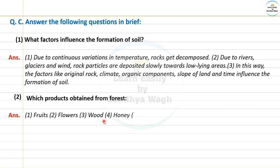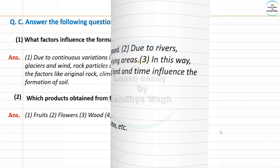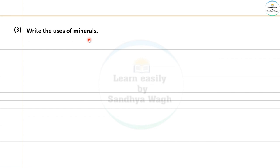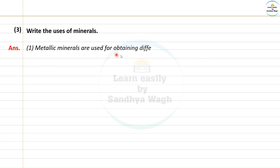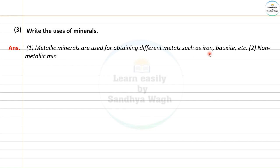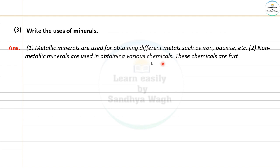Forest products include wood, honey, rubber, resin, latex, etc. Next question: write the uses of minerals. Metallic minerals are used for obtaining different metals such as iron, bauxite, etc. Non-metallic minerals are used for obtaining various chemicals.